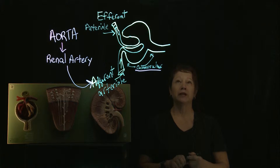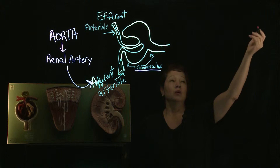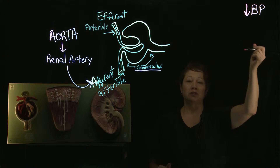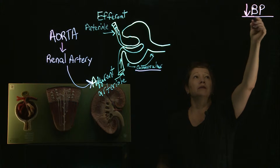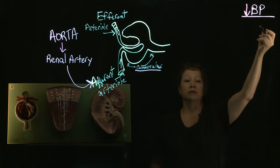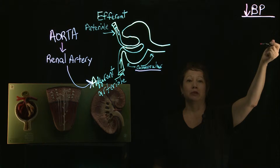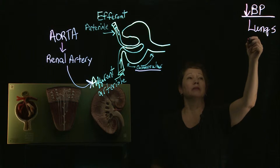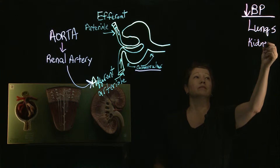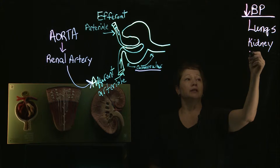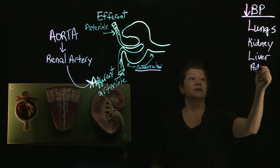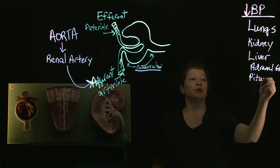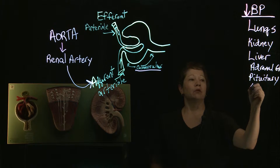When we talk about what happens with the kidney when we have decreased blood pressure — whether under anesthesia, in an awake patient, or a sick patient — there are a lot of mechanisms activated and a lot of organs become active in trying to increase blood pressure. The primary organs to remember are the lungs, the kidney, the liver, the adrenal gland, the pituitary, which lives at the base of the brain, and the sympathetic nervous system.